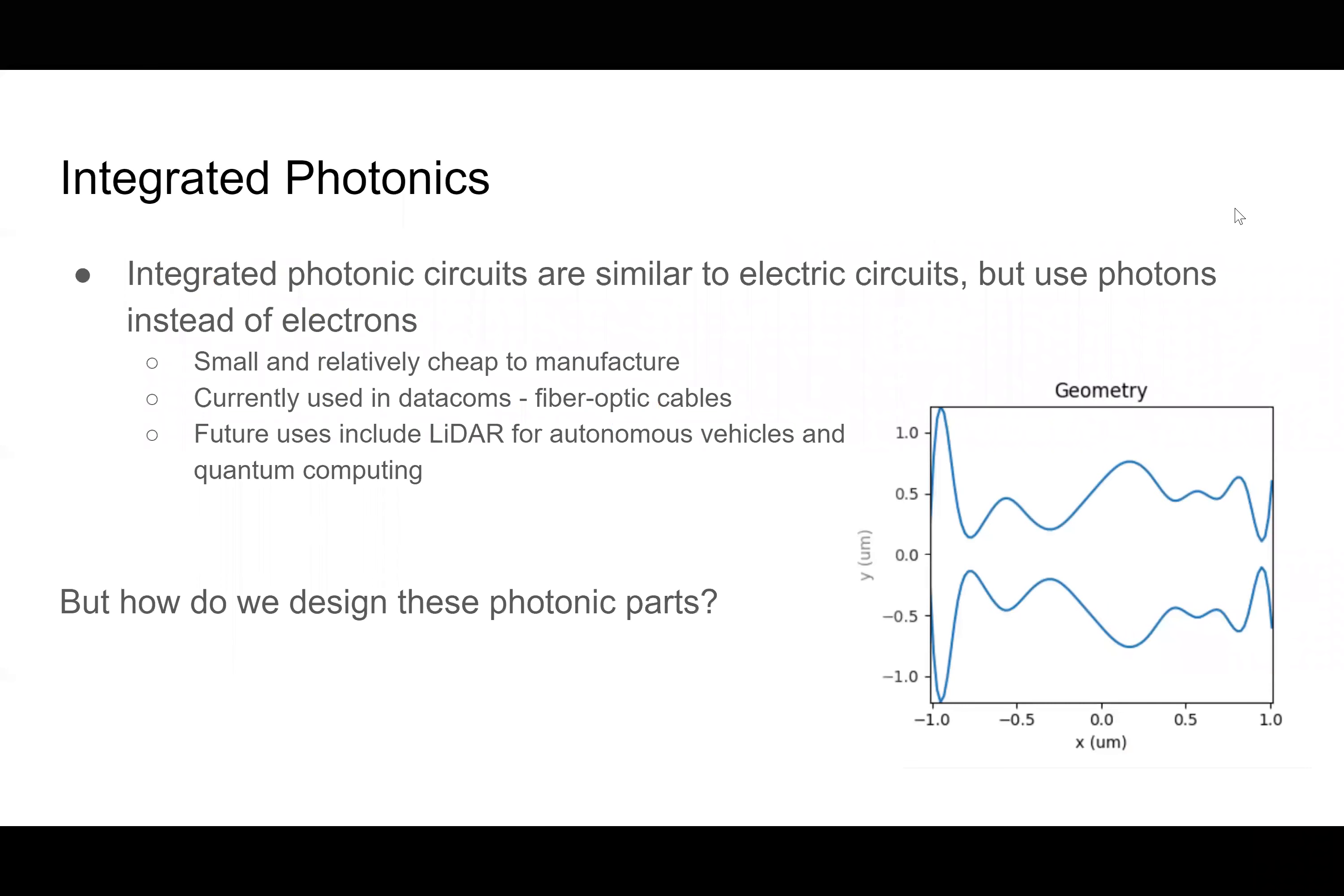So the first topic is integrated photonics, and integrated photonic circuits are similar to electric circuits that use photons instead of electrons. They are small because they are working with light, which has incredibly small wavelengths, so these can be very small and relatively cheap to manufacture. They're currently used in data comms like fiber optic cables because the information can travel very quickly along these wires at the speed of light, and also with very little crosstalk between the cables. So they're great for especially long distance cables.